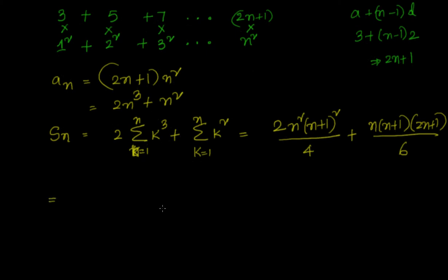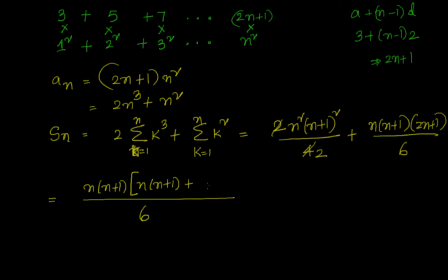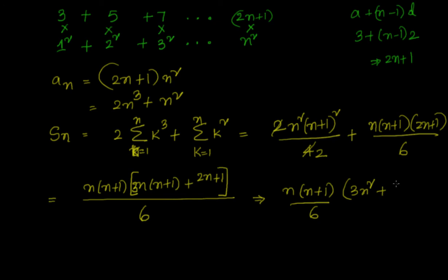With LCM of 2 and 6 equal to 6, I take n(n+1) as a common factor: Sₙ = n(n+1)/6 · [3n(n+1) + (2n+1)]. Expanding: 3n(n+1) + (2n+1) = 3n² + 3n + 2n + 1 = 3n² + 5n + 1. So Sₙ = n(n+1)(3n² + 5n + 1)/6.